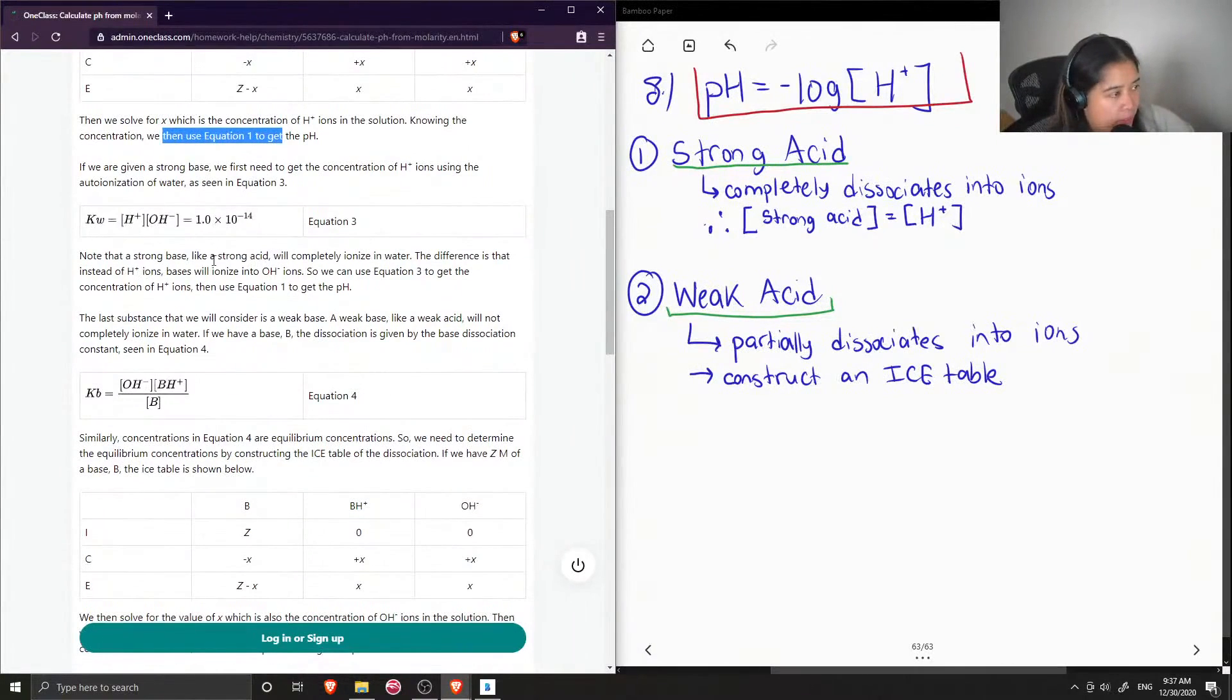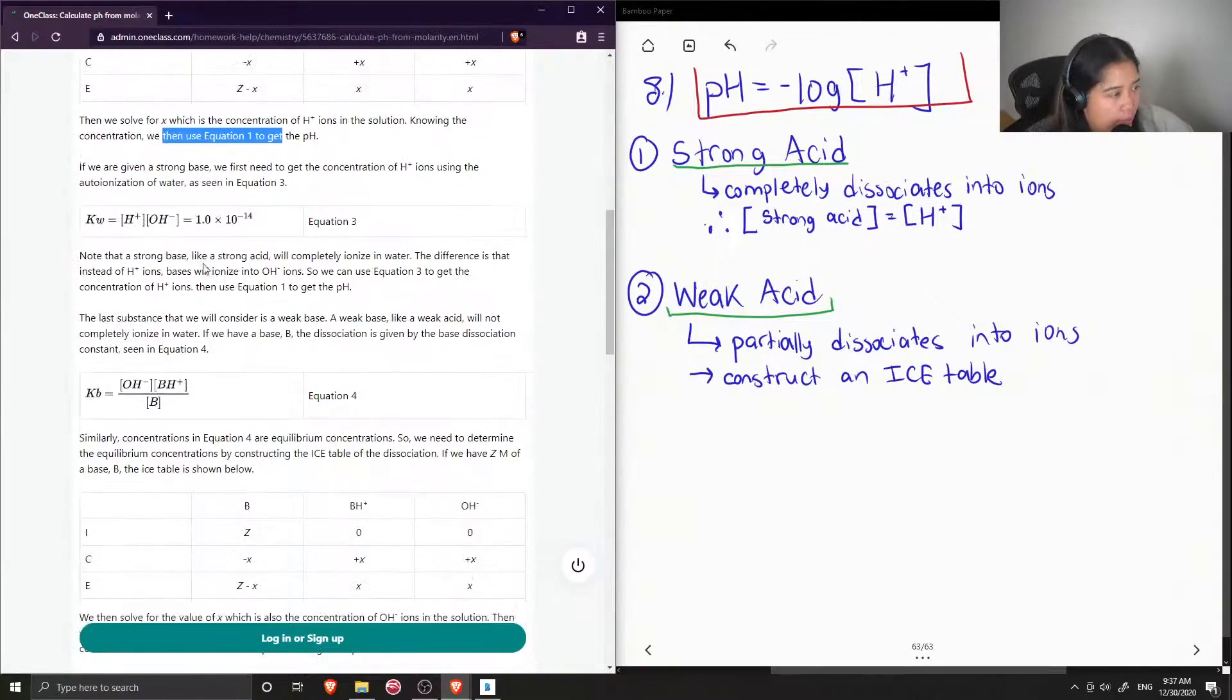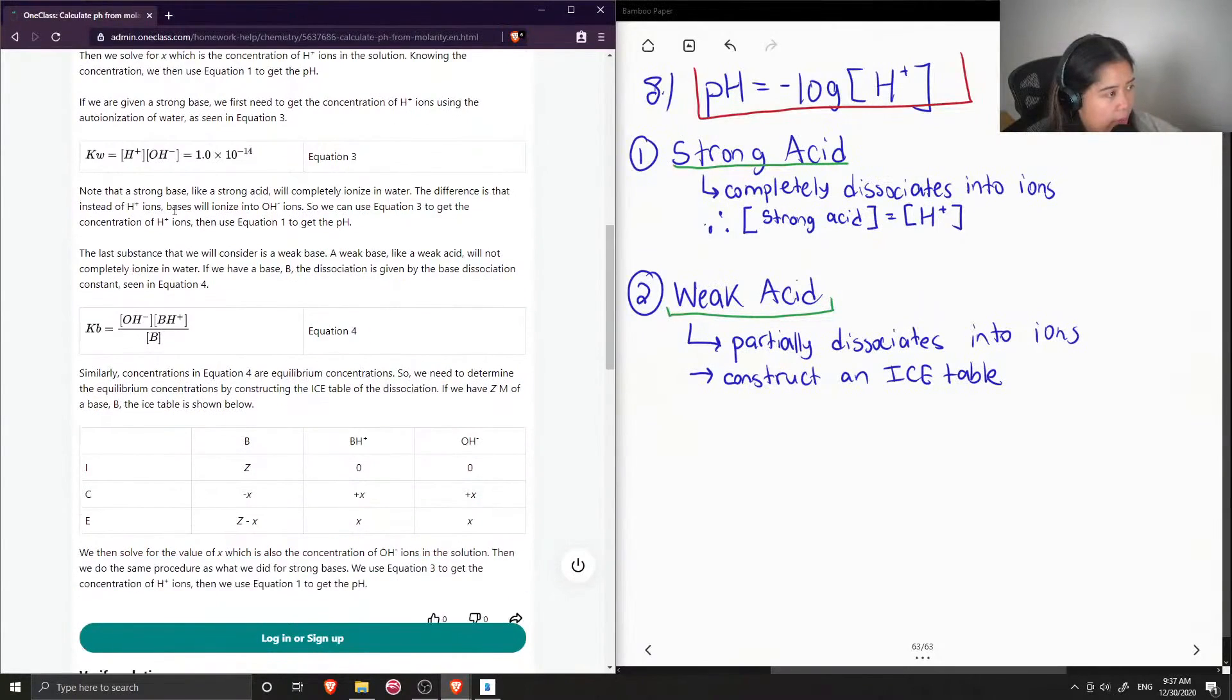Okay, so they also did it in the case of bases as well. If we are given a strong base, we first need to get the concentration of H+ ions using the auto-ionization of water. So this is if you had a base, then you would use this relationship.